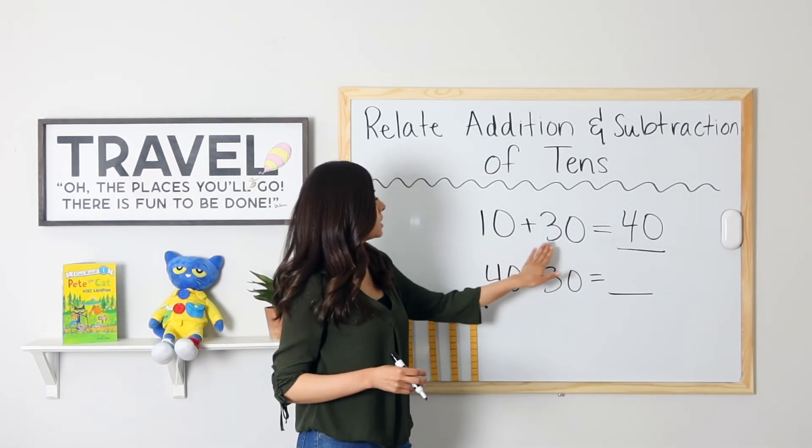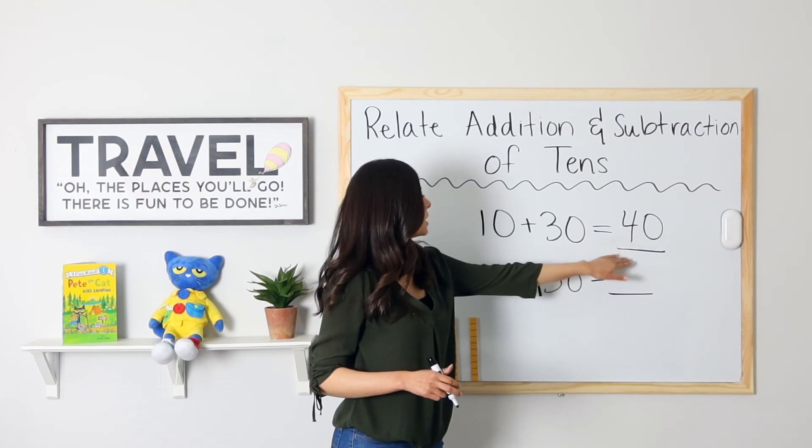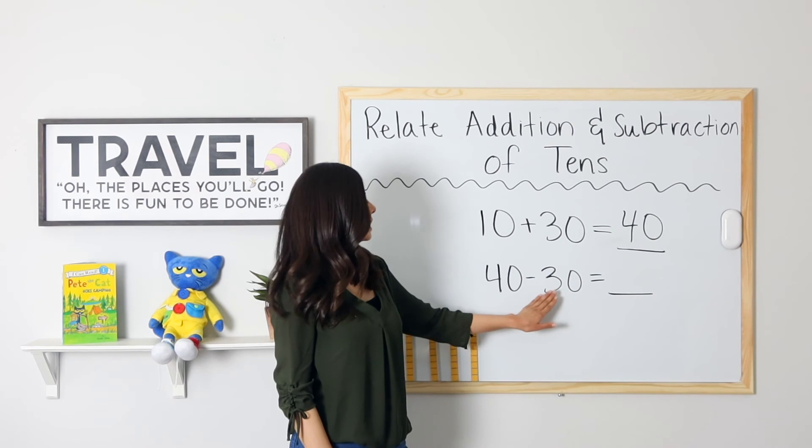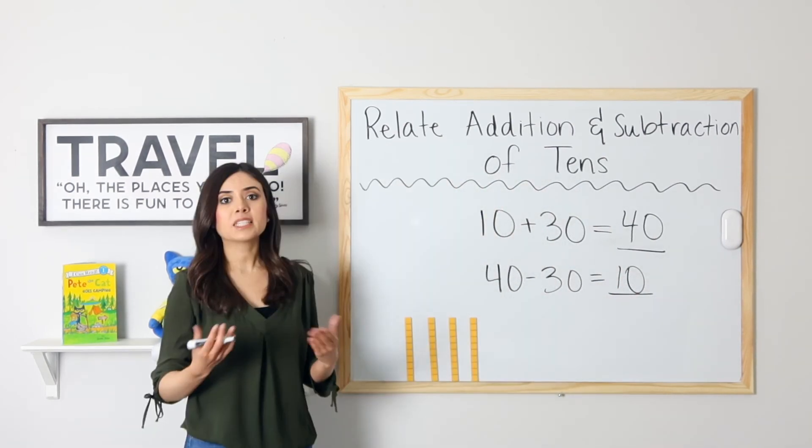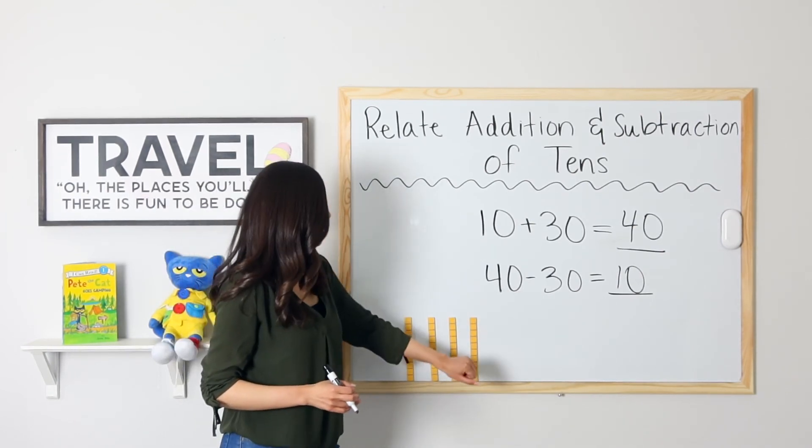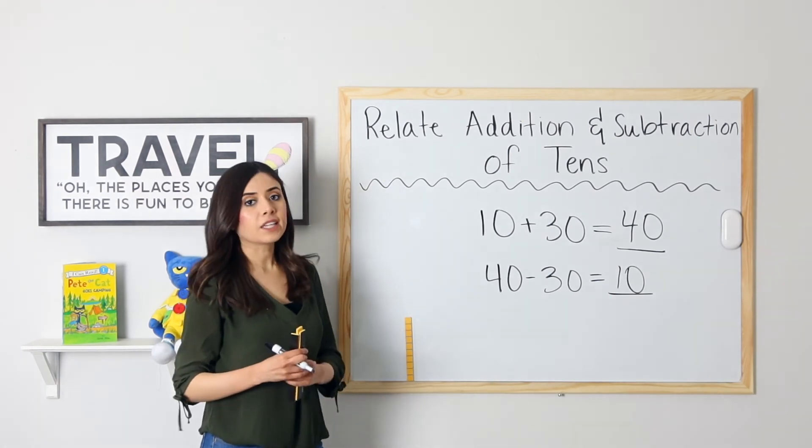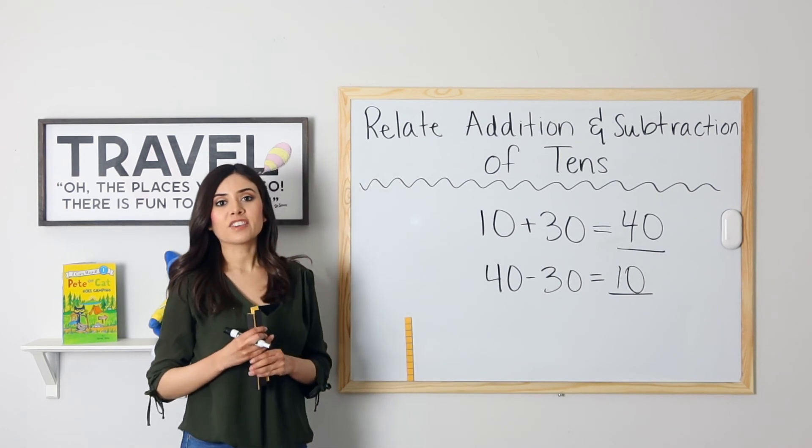So if 10 plus 30 equals 40, then that means 40 minus 30 equals 10. 40 minus 30 equals 10. Let's just double check our work. I have 40 units. I will take away 30. 10, 20, 30. Did I end up with 10? Yes, I did. Very good.